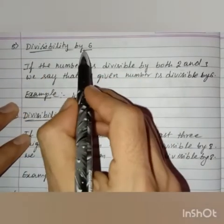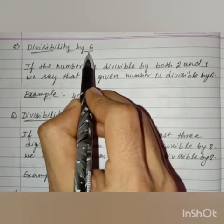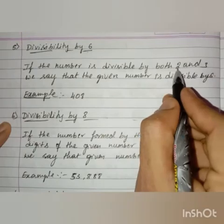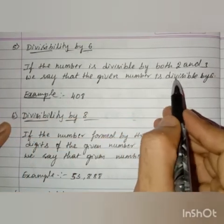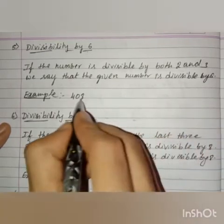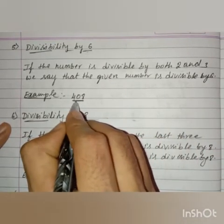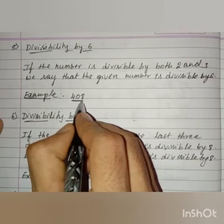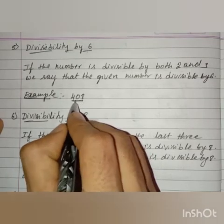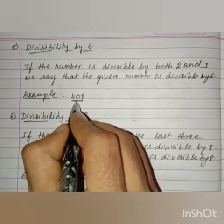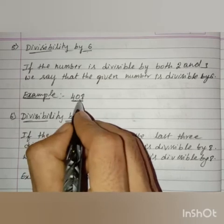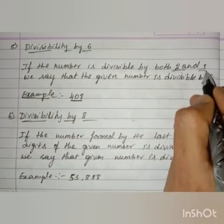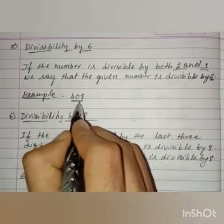The next rule is divisibility by 6. If any number is divisible by 6, the rule is: if the number is divisible by both 2 and 3, we say that the given number is divisible by 6. It should be divisible by both 2 and 3. If the number is divisible by 2 but not by 3, then the given number is not divisible by 6.